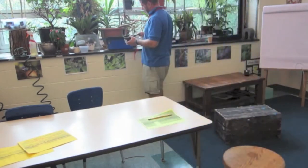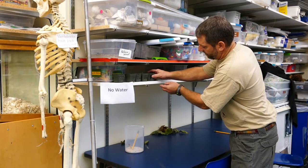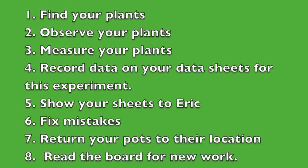Put your data sheets in your folder, put your folder in your bin, and put your pots back in the container or place where you found them.